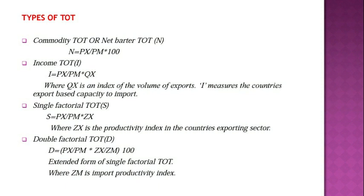The next type is Double Factorial TOT, represented by d. The formula is: d = (PX / PM) × (Zx / Zm) × 100, where PX and PM are the prices of exports and imports, Zx is the productivity index in the exporting sector, and Zm is the productivity index in the importing sector.